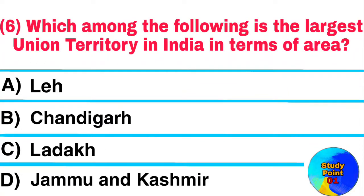Question: Which among the following is the largest union territory in India in terms of area? Answer: Jammu and Kashmir.